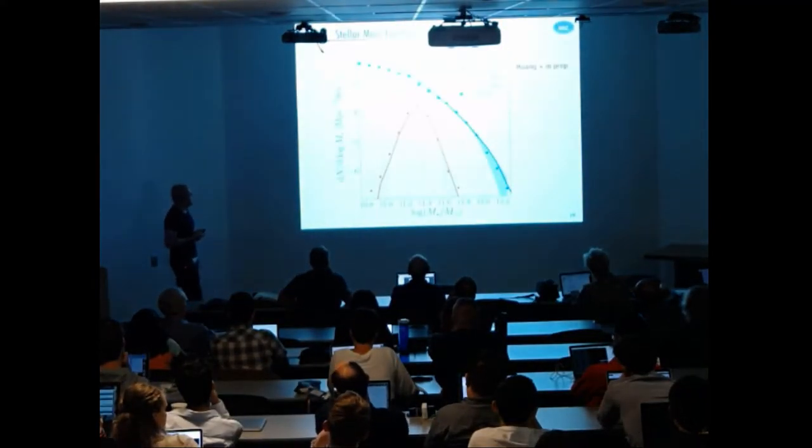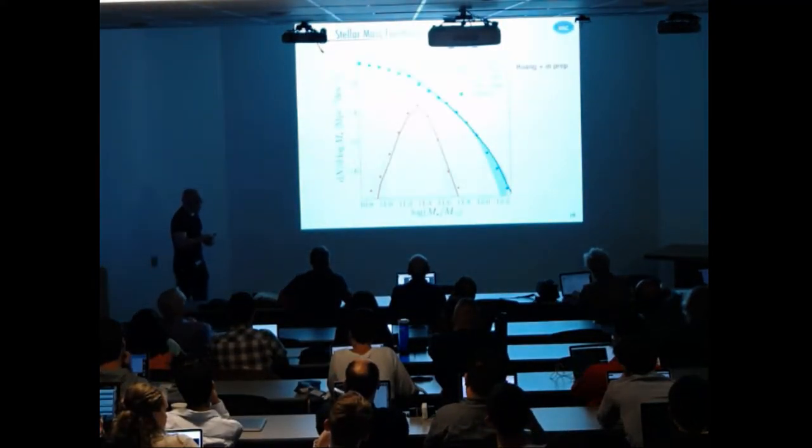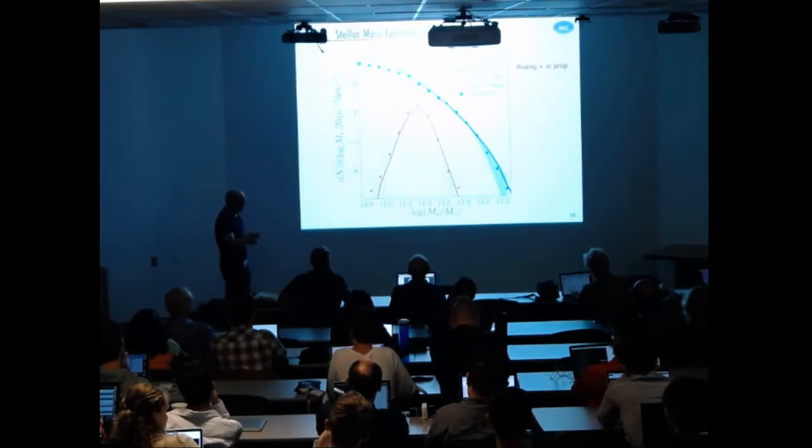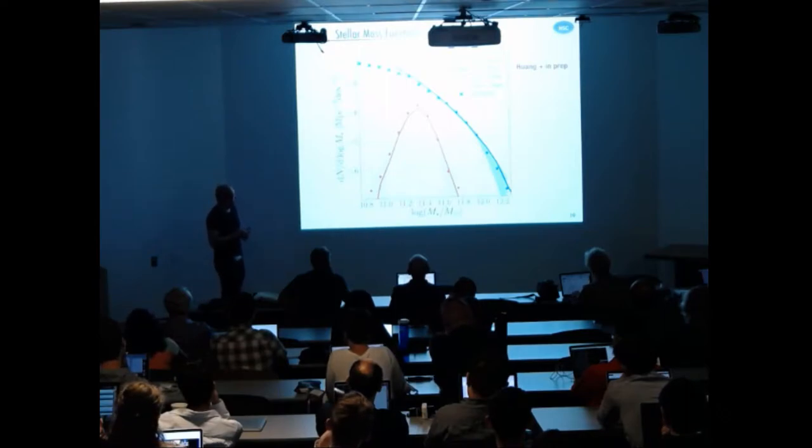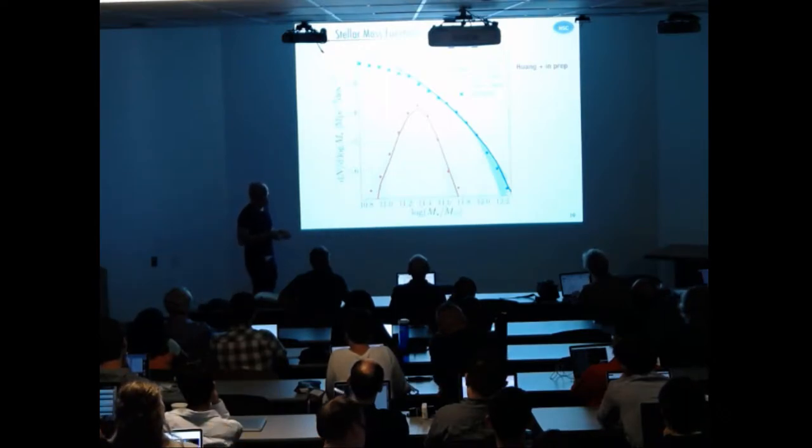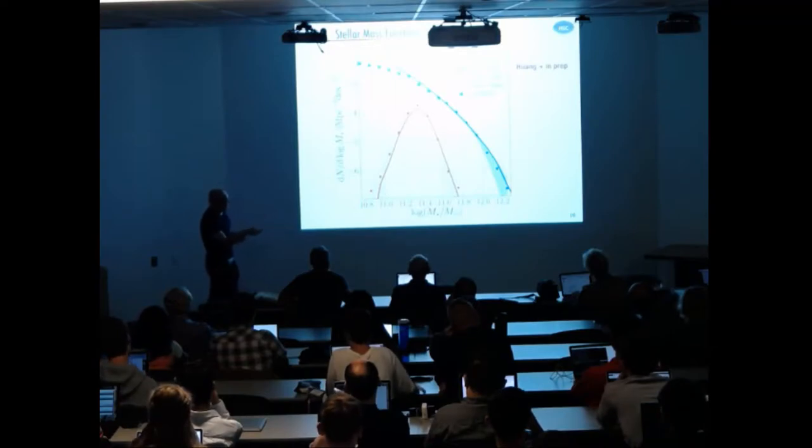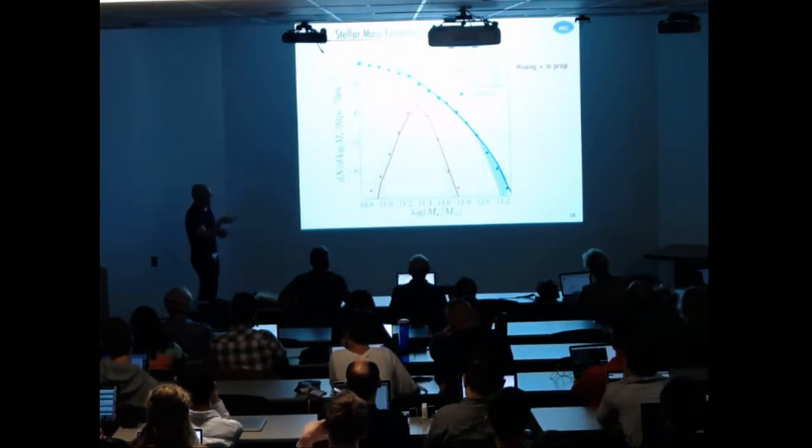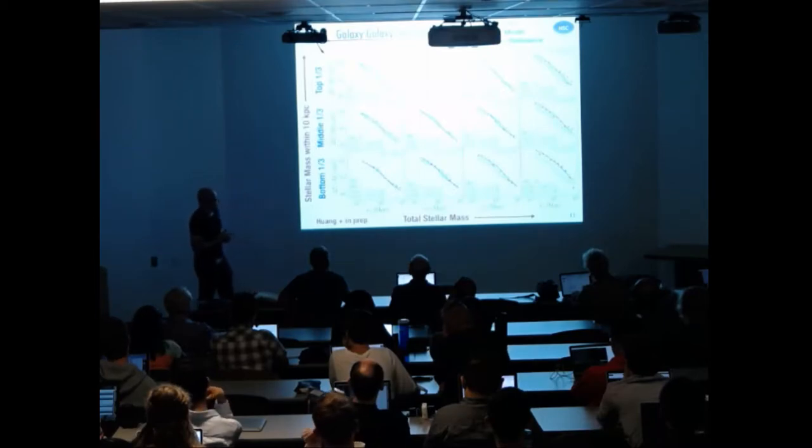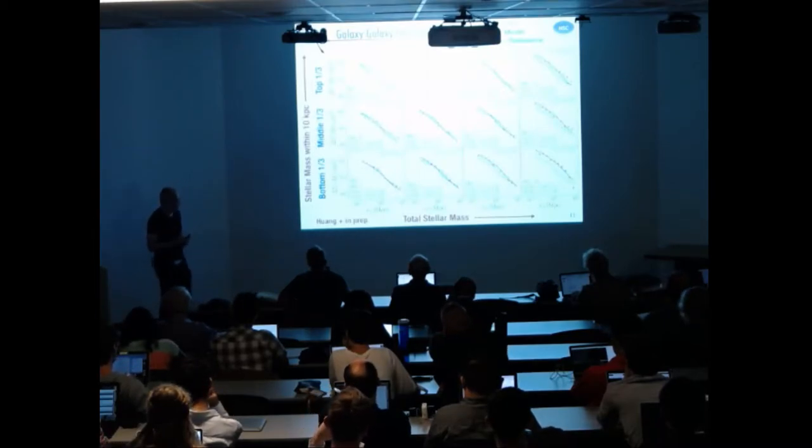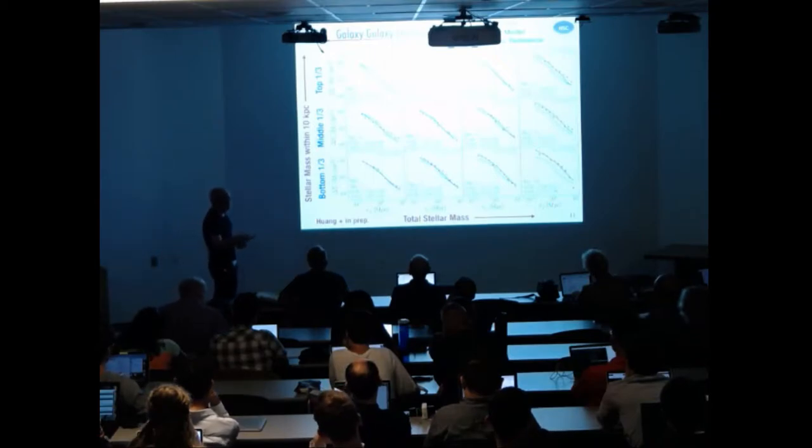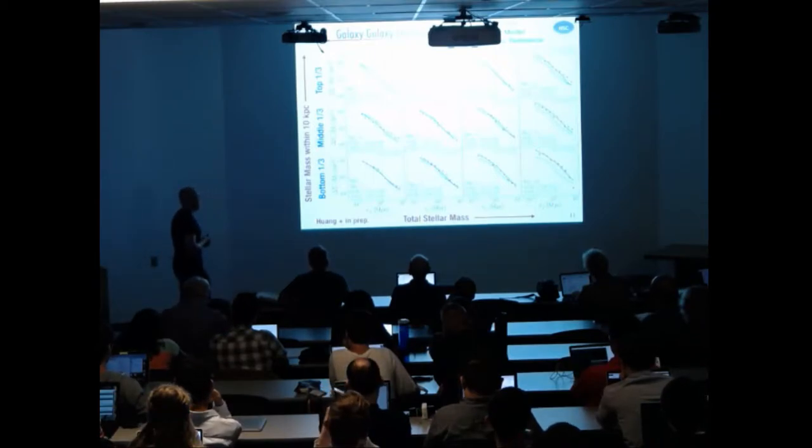So actually the first stop is the stellar mass function. And the data points are the points with the uncertainty range and our model prediction is a line here. So basically we can see that using this forward model, we can reproduce the stellar mass function with total stellar mass and nearly outer aperture and the 10 kpc stellar mass within the inner aperture.